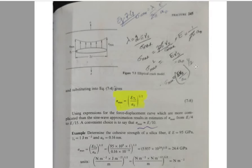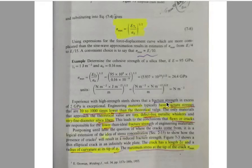Using more complex expressions for the force-displacement curve — more complicated than the sine wave approximation — results in estimates of sigma_max ranging from E/4 to E/15. A convenient choice is to take sigma_max ≈ E/10. Now, postponing the question of where cracks come from, it is a logical extension to consider stress concentration: cracks will result in a reduced fracture strength.